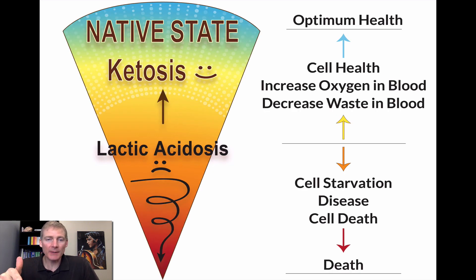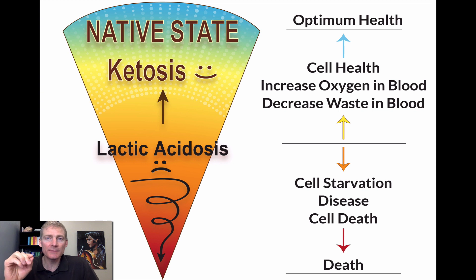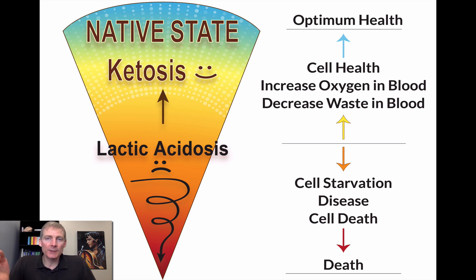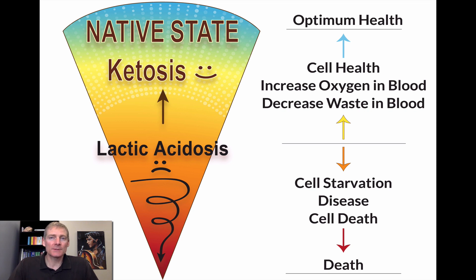This is a graphic that I made. On the far right we have optimum health, and that's the native state of the body. A mild state of ketosis is the native state of the body, if you consider that most of the population of the earth grew up over millennia with four seasons — half the year with no plants, the other half with plants. So in general people would be in and out of ketosis, and ketosis is part of the native state of the body.